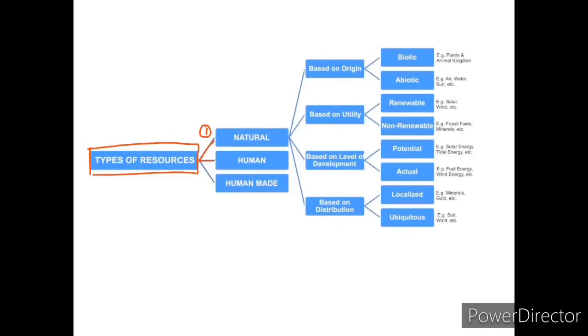Natural resources, second is human, third is human-made resources. Natural resources are broadly classified in four categories. First, based on origin, which is again divided into two: biotic resources and abiotic resources.